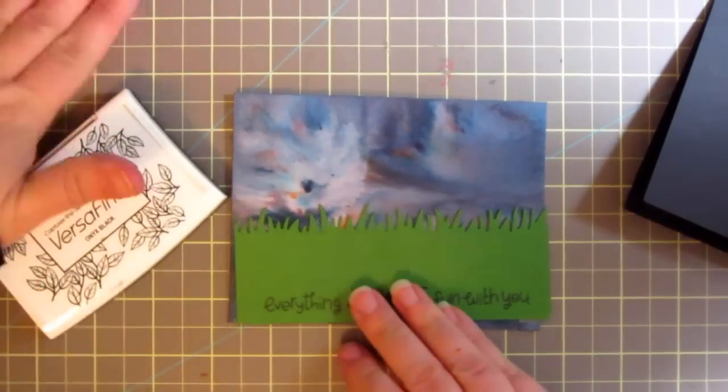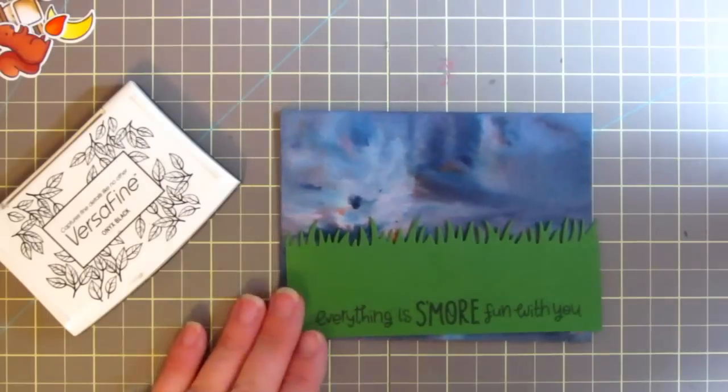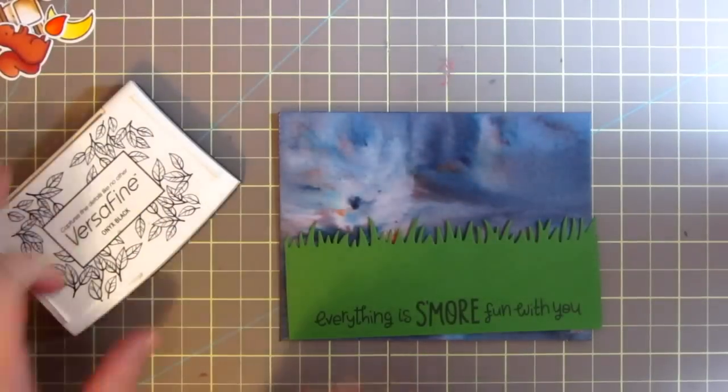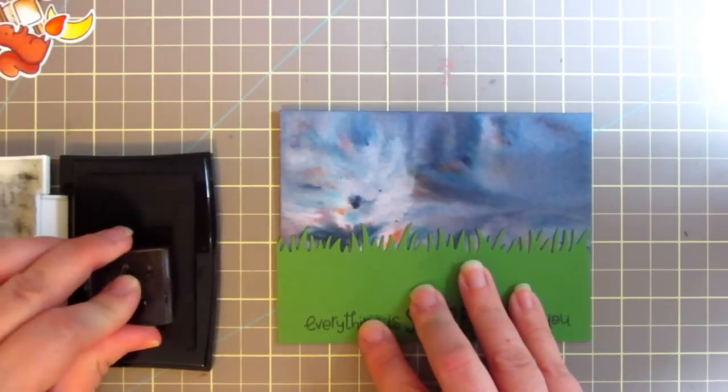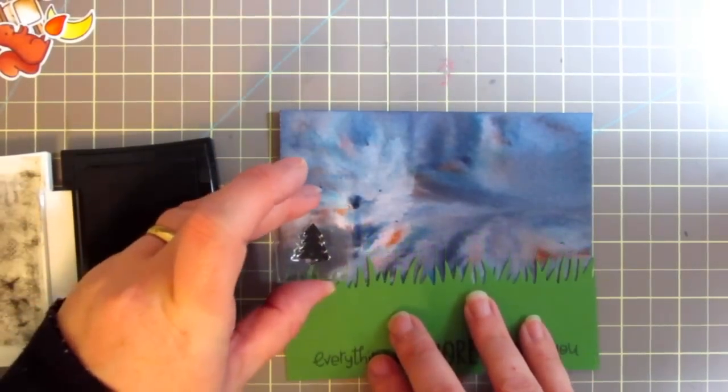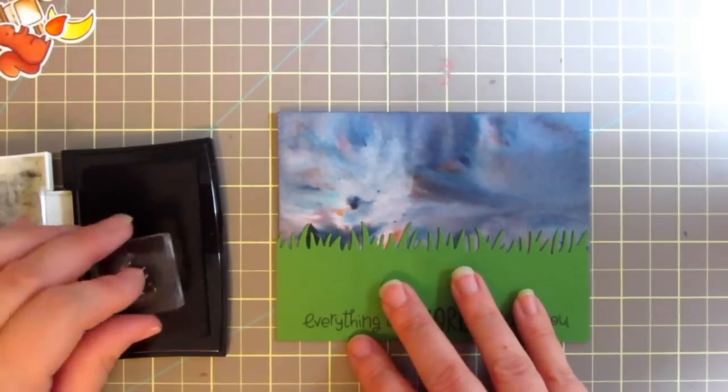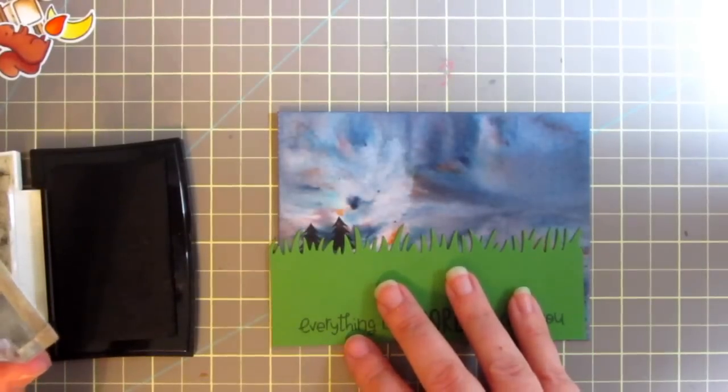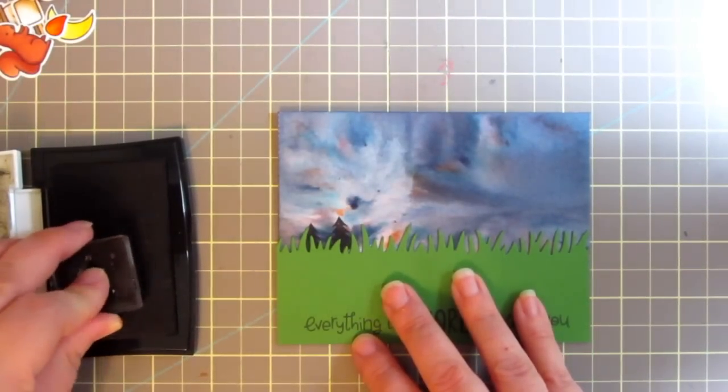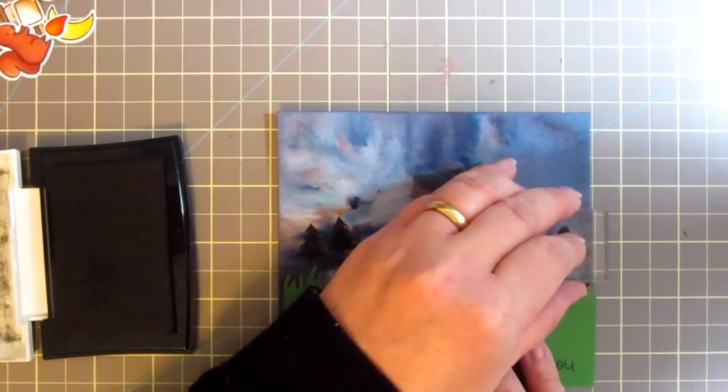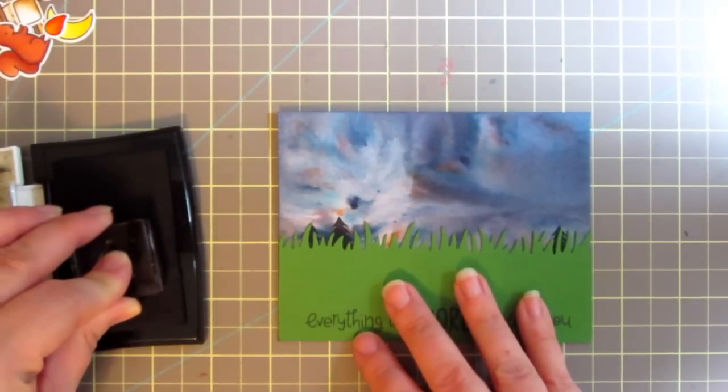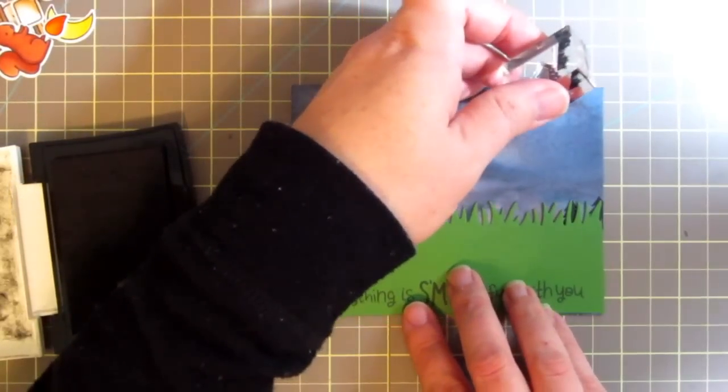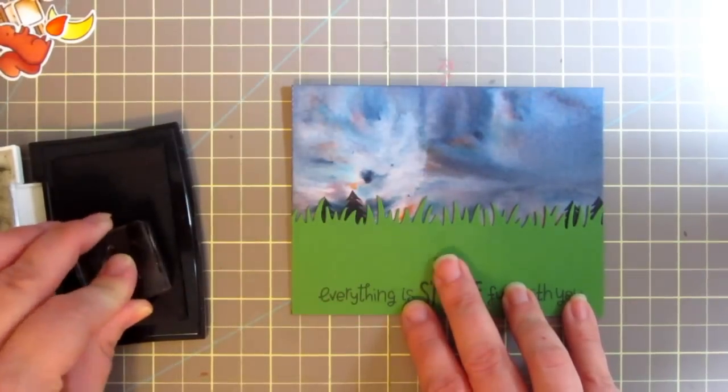I've taken the Lawn Fawn grassy border die and stamped my sentiment 'everything is more fun with you' at the bottom. Now I'm grabbing the largest tree from that stamp set and my VersaFine Onyx Black ink. I'm going to hold the grass in position and then just kind of move it aside so that I can stamp some distant trees in the background. I thought that they would be black against that night sky because they're farther back. I just went ahead and stamped those all along the back to give a little more visual interest to the scene.